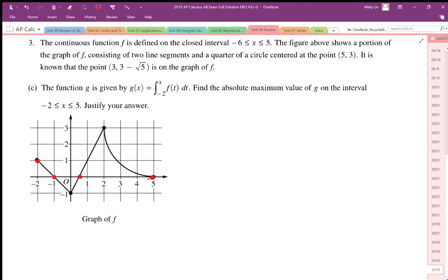Question number 3c says the function g is given by g of x is equal to the area under the curve from negative 1 to x of f of t.